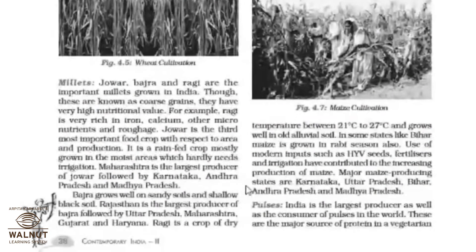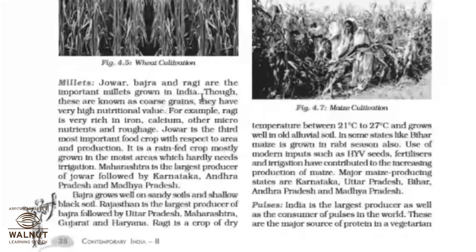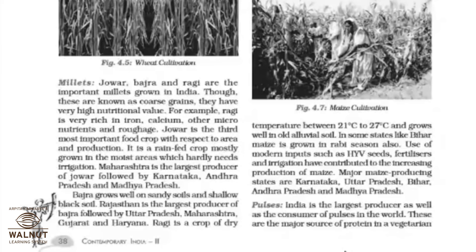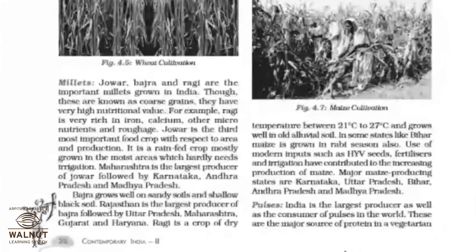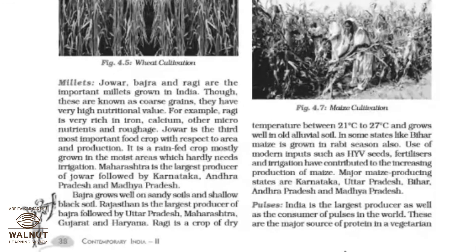On page number 40: jawar, bajra, and ragi are the important millets grown in India. Though these are known as coarse grains, they have very high nutritional value. For example, ragi is very rich in iron, calcium, and other micronutrients. Jawar is the third most important food crop with respect to area and production. It is a rain-fed crop mostly grown in moist areas which hardly need irrigation. Maharashtra is the largest producer of jawar, followed by Karnataka, Andhra Pradesh, and Madhya Pradesh.